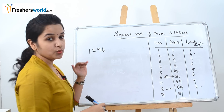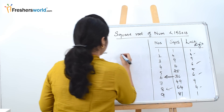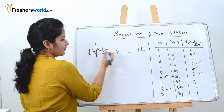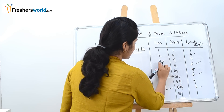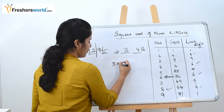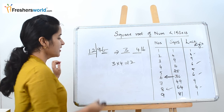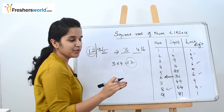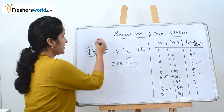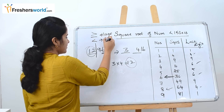The next question is 1296. The last digit is 6, which falls between 4 or 6 in the last digit column, so write 4 or 6. Ignore the last two digits; 12 falls between 9 and 16, so take the smallest square root value, which is 3. Multiply 3 by its next number 4 to get 12. Here, 12 equals the first two digits 12 as well. The concept is: if the number is greater than or equal, take the large number; if it is less, take the small number.